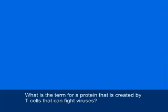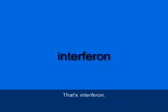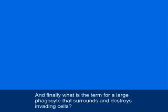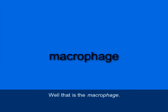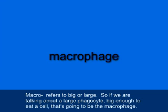What is the term for a protein created by T-cells that can fight viruses? That's interferon. And finally, what is the term for a large phagocyte that surrounds and destroys invading cells? That's the macrophage. Macro refers to big or large, so a large phagocyte big enough to eat a cell is the macrophage.